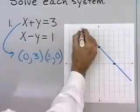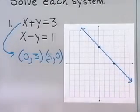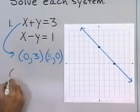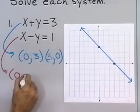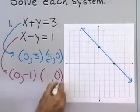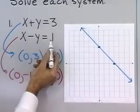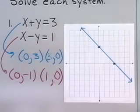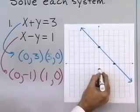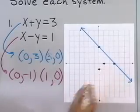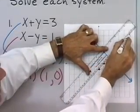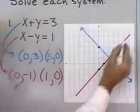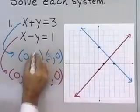All the solutions to that equation lie along that blue line. Now I'll graph my second equation, x minus y is equal to 1. Let's let x be equal to 0 — when x is 0, I have negative y is equal to 1, so y is negative 1. Let's let y be equal to 0 — when y is 0, x minus 0 is 1, so x is 1. I'll graph these two points: x is 0, y is negative 1, and x is 1, y is 0. I'll draw a line between those two points.